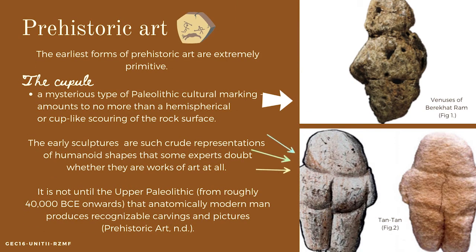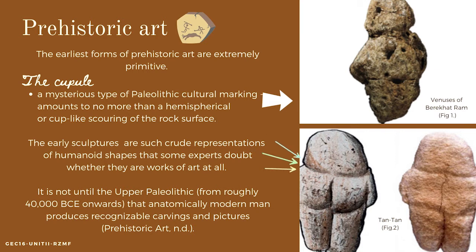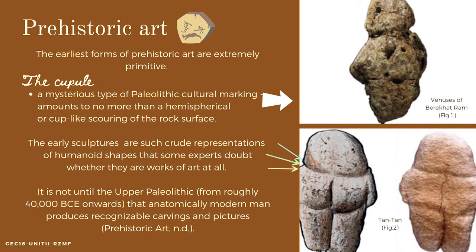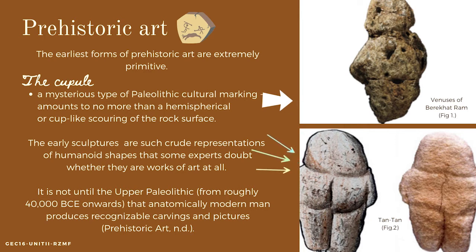The earliest forms of prehistoric art are extremely primitive. It is a mysterious type of Paleolithic cultural marking which amounts to no more than a hemispherical or cup-like scouring of the rock surface. The early sculptures are such crude representations of humanoid shapes that some experts doubt whether they are works of art at all.